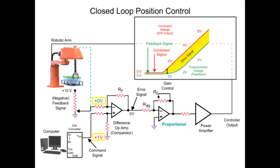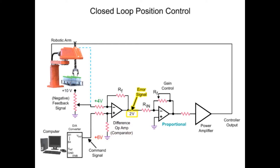In this system, there is not an immediate response by the robotic arm to the command signal. The delay of the arm and feedback signal creates a positive error signal voltage at the output of the difference op-amp. The error signal is inverted by the proportional difference op-amp to a negative voltage, then amplified by the power amp and inverted to a positive voltage and applied to the motor of the robotic arm.